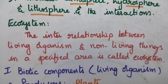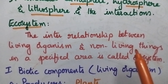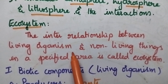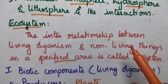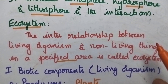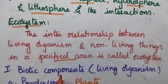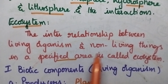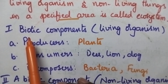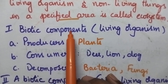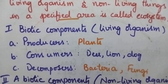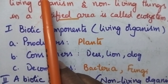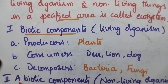Ecosystem in general includes the relationship between living organisms and non-living organisms in a specified area. Best examples include forest ecosystem, pond ecosystem, river ecosystem, desert ecosystem, etc. Ecosystem includes both living and non-living organisms. The living organisms are called biotic components and the non-living organisms are called abiotic components. Ecosystem mainly involves the interaction between biotic and abiotic components.